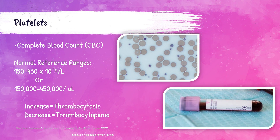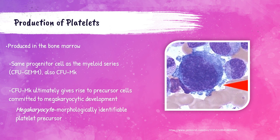We test platelets in the clinical laboratory, included with the complete blood count or CBC. It's run on an EDTA tube — a lavender tube — which cannot be clotted. Results are produced by an automated CBC analyzer. The normal reference range for platelets is 150 to 450 times 10 to the ninth power per liter, or 150,000 to 450,000 per microliter. If a patient has an abnormally increased level of platelets it's called thrombocytosis; if they have an abnormally decreased platelet level it's referred to as thrombocytopenia.